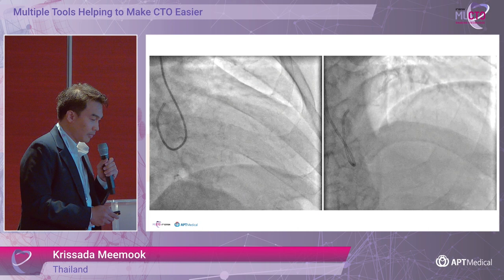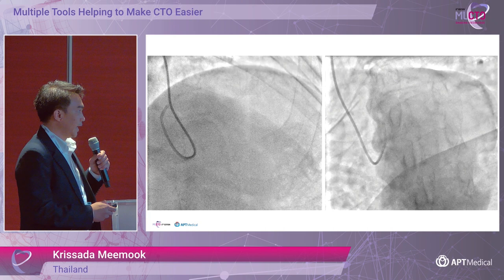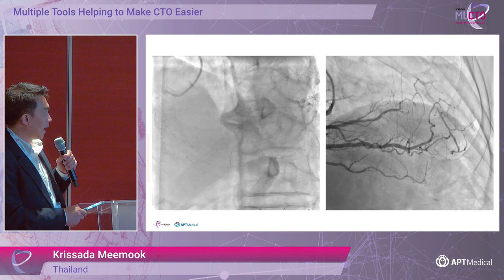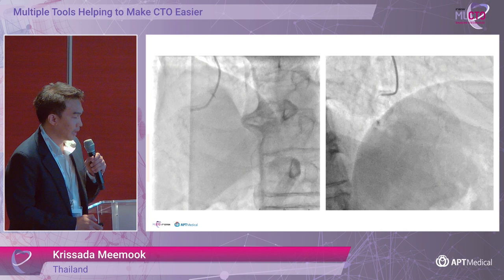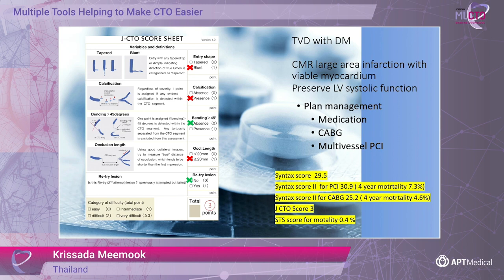You can see the total occlusion of the proximal to very ostial LAD. You cannot see the stump at the very ostium — the occluded segment is about 2 cm. On the right, you can see severe stenosis on the distal RCA, and the RCA provides collateral to the mid-to-distal LAD. There is very good collateral from the septum and also the PDA. The J-CTO score in this case was three.